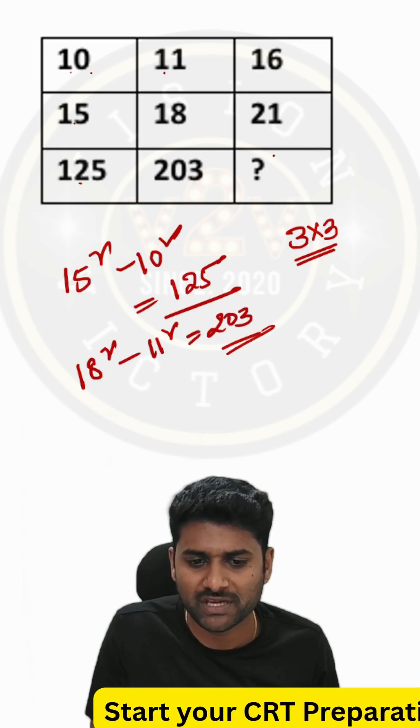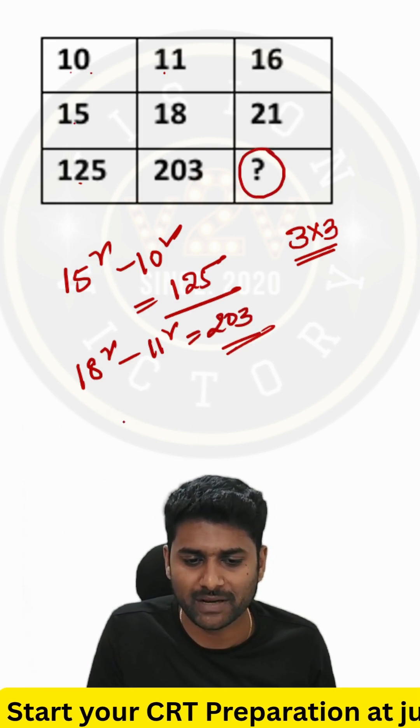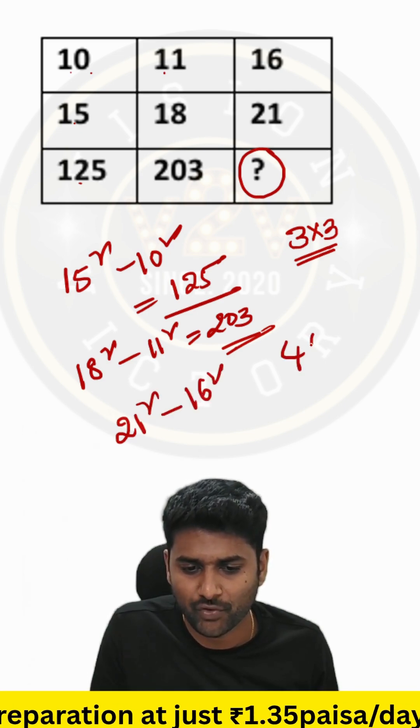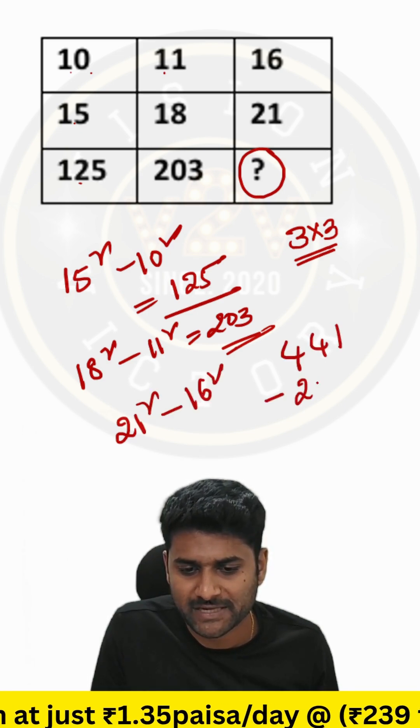Apply the same logic here, we can replace this question mark. 21 squared minus 16 squared, so 441 subtract 256.